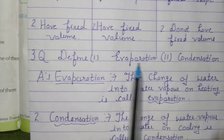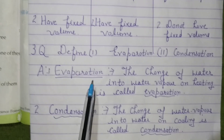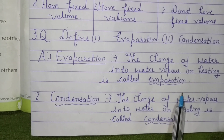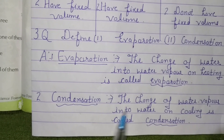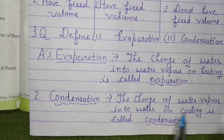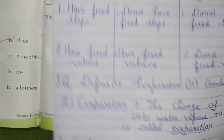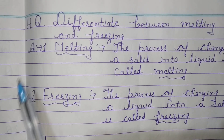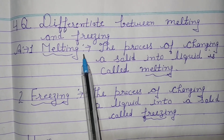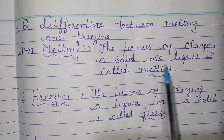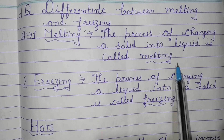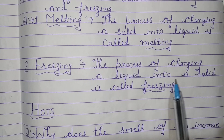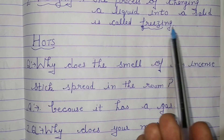Third question: Define evaporation and condensation. Evaporation: the change of water into water vapor on heating is called evaporation. Condensation: the change of water vapor into water on cooling is called condensation. Fourth question: Differentiate between melting and freezing. Melting: the process of changing a solid into liquid is called melting. Freezing: the process of changing a liquid into a solid is called freezing.